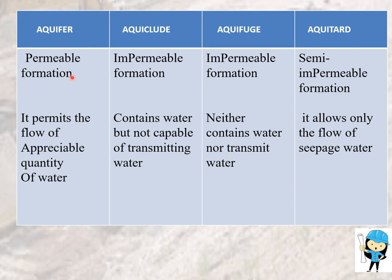Now let's see the difference. Aquifer is a permeable formation. Aquiclude is an impermeable formation. Aquifuge is also an impermeable formation. Aquitard is a semi-impermeable formation. Aquifer allows the flow of an appreciable quantity of water. Aquiclude contains water but is not capable of transmitting it. Aquifuge neither contains water nor transmits water. Aquitard allows only the flow of seepage water.